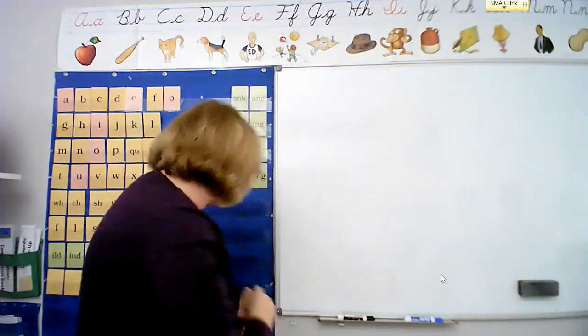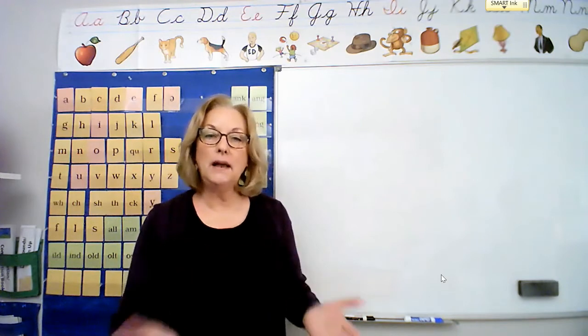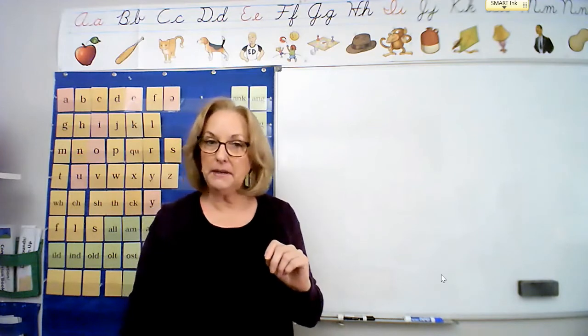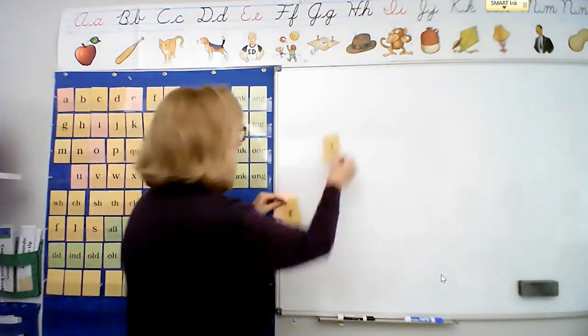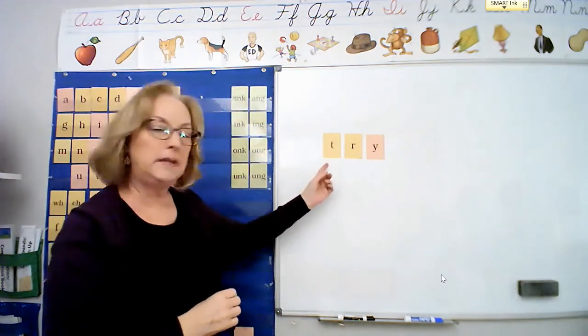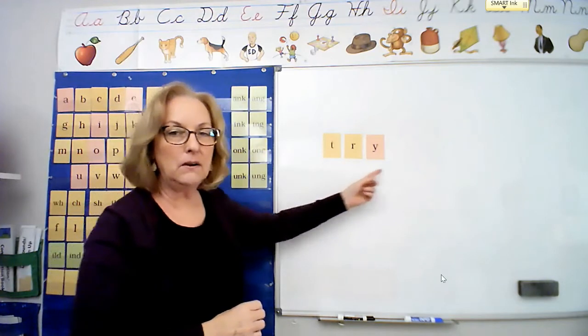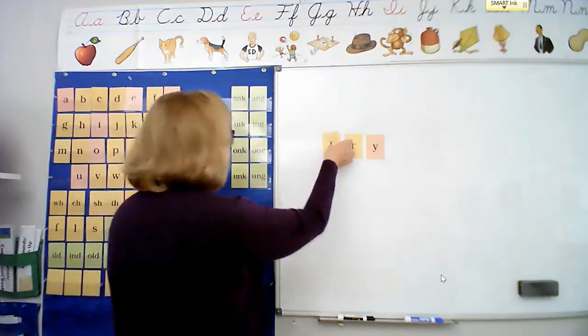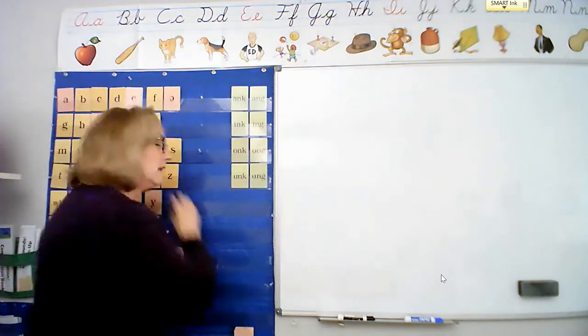And let's make some words. First word, say try, try. Tap it with me, t-r-y. Go ahead and make it. Let's check your word. Look up here at mine and check it with mine. Spell it out loud, t-r-y, try. Did you get it right? Perfect. Let's spell it away, t-r-y. Next word.